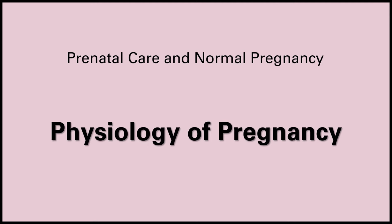The next organ system is the cardiovascular system. During pregnancy, cardiac output increases by 30 to 50%, mostly due to a 30% increase in stroke volume, as well as an increase in heart rate by about 15 to 20 beats per minute. Remember, cardiac output is stroke volume times heart rate. Despite this increased cardiac output, there's still a decrease in blood pressure and systemic vascular resistance due to progesterone-induced vasodilation. Throughout the pregnancy, the heart gets displaced upwards, forwards, and slightly to the left. Mild hypertrophy often occurs, as well as an S3 third heart sound.